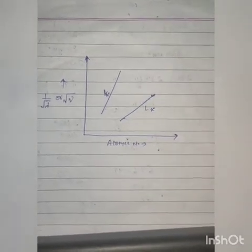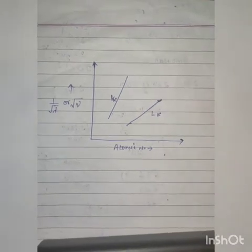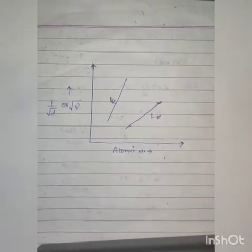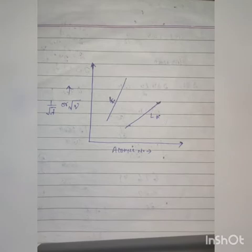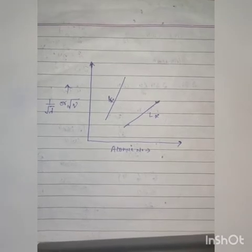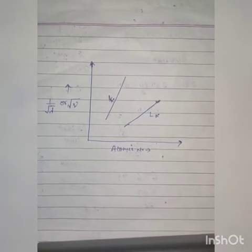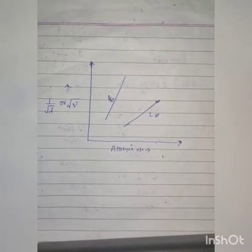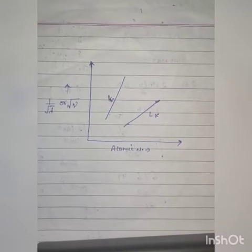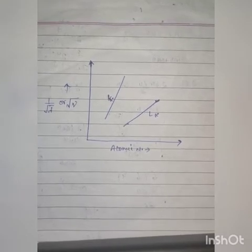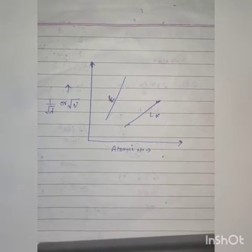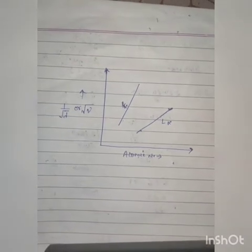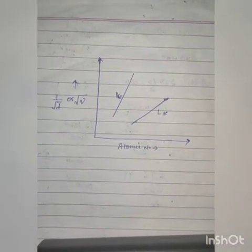On the basis of this observation, Moseley concluded that the square root of the frequency of a particular spectral line is proportional to the atomic number of the element emitting the line. This statement is known as Moseley's law.